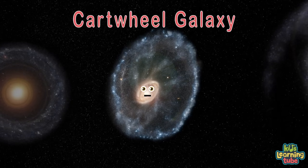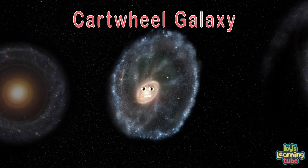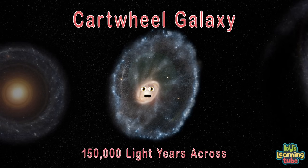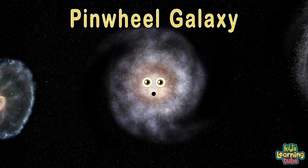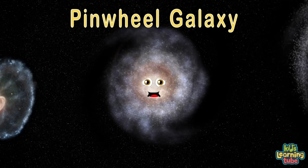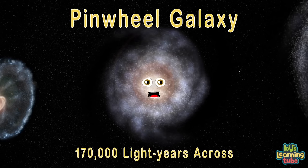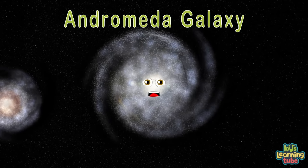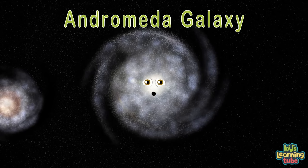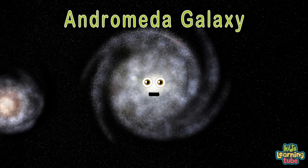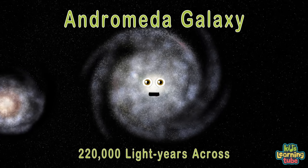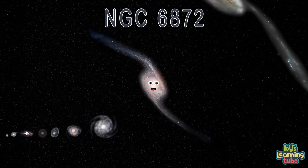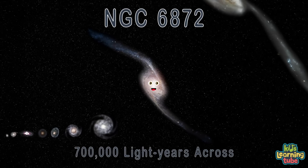I'm the Cartwheel Galaxy, a lenticular ring galaxy discovered by Fritz Zwicky in 1941, 150,000 light years across. I am M101, also known as the Pinwheel Galaxy, discovered by Pierre Méchain in 1781, and 170,000 light years across — nearly twice the size of the Milky Way. I'm the Andromeda Galaxy, a spiral galaxy and the nearest major galaxy to the Milky Way, 220,000 light years across. I'm NGC 6872, also known as the Condor Galaxy, a large barred spiral galaxy discovered in 1835 by John Herschel, 700,000 light years across.